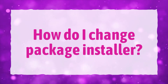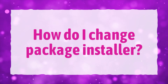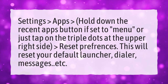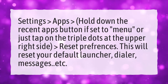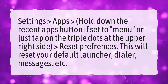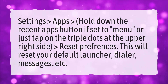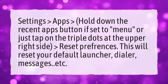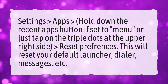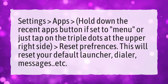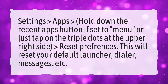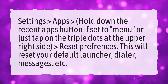How do I change Package Installer? Go to Settings, then Apps. Hold down the Recent Apps button if set to menu, or just tap on the triple dots at the upper right side, then select Reset Preferences. This will reset your default launcher, dialer, messages, etc.